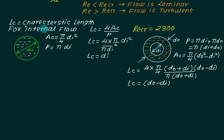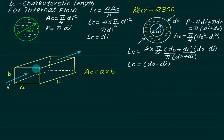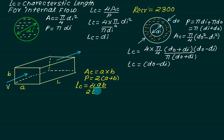These definitions are only valid for internal flow. Now consider an air conditioning duct with a rectangular cross section of size a by b and length l. Air enters from the side with cross-sectional area a times b, so AC equals a times b and the wetted perimeter equals 2 times (a plus b). Applying the internal flow definition gives characteristic length LC equals 2ab divided by (a plus b).